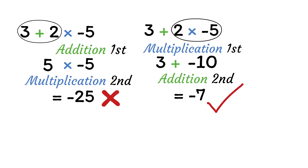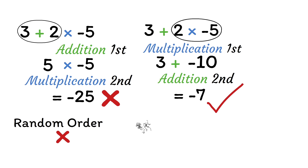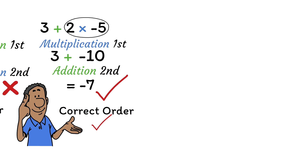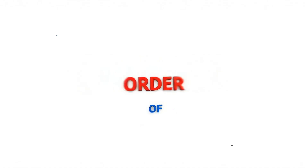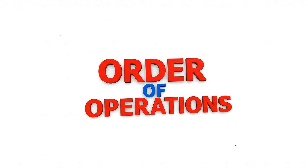Notice that in both cases we performed the operations in different orders and we ended up with two different answers. This shows us something very important: in math, you cannot just solve problems in any random order. There is a correct order of operations that we must always follow. To make sure students don't perform operations in different orders, mathematics gives us a specific rule called the order of operations, represented by the acronym PEMDAS.